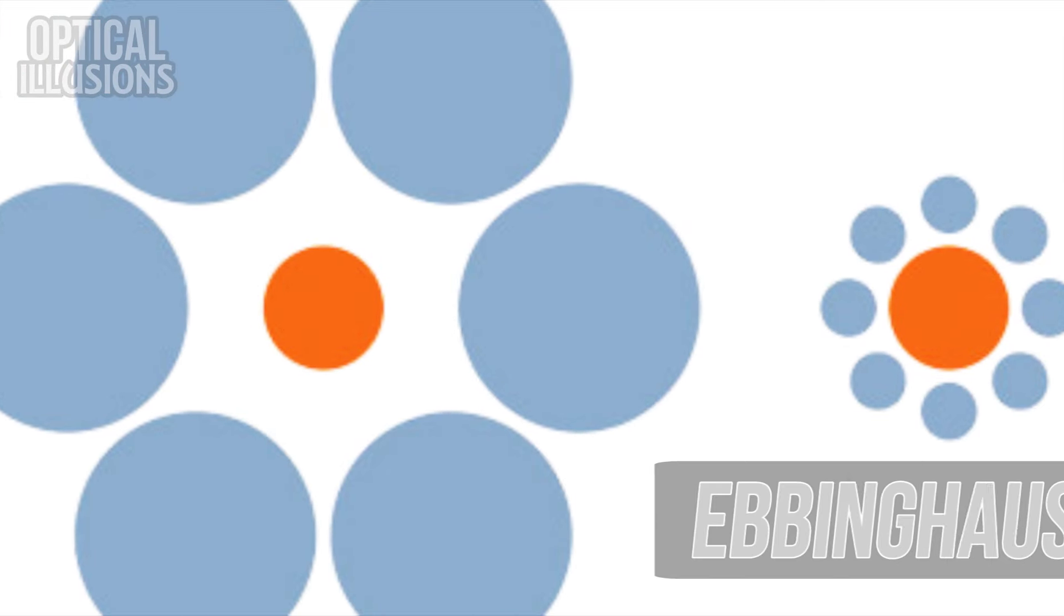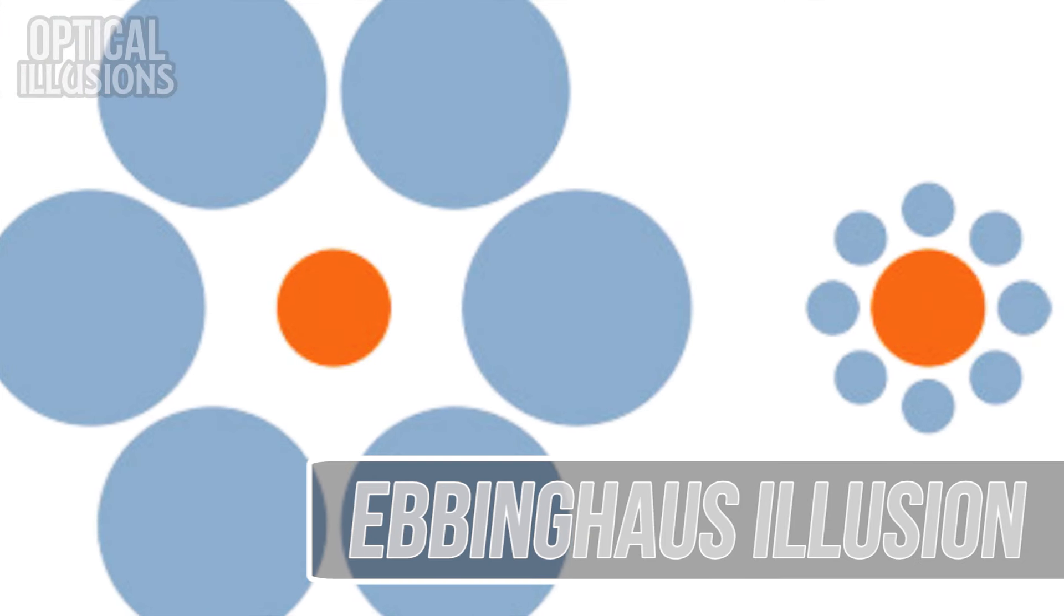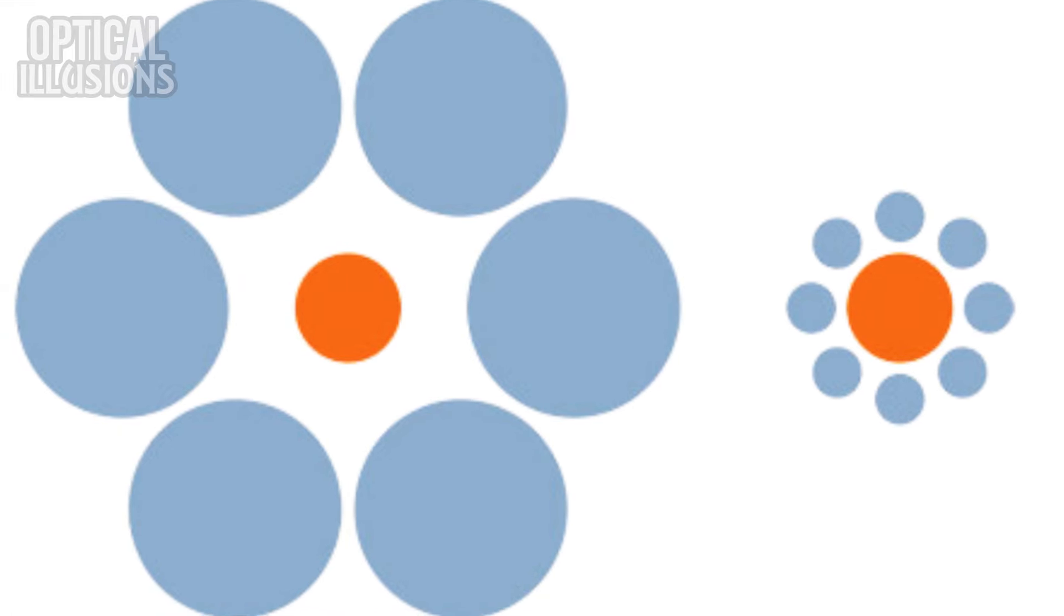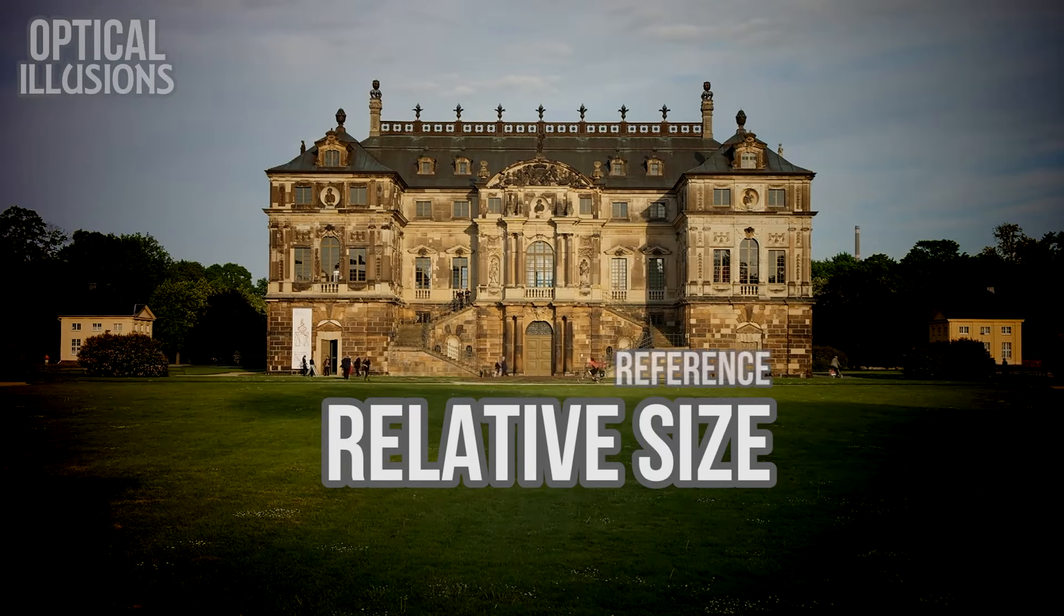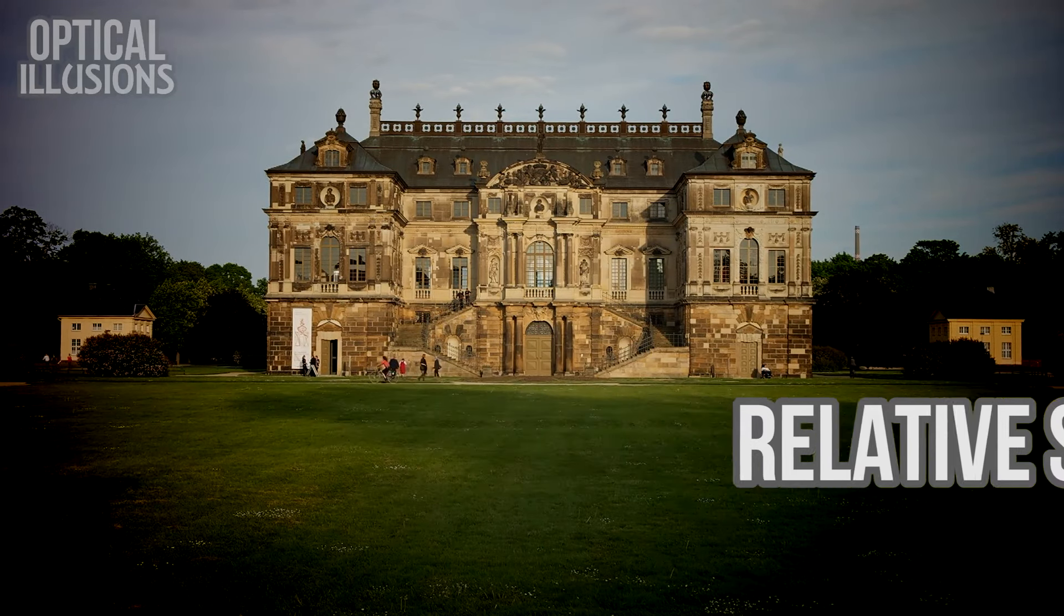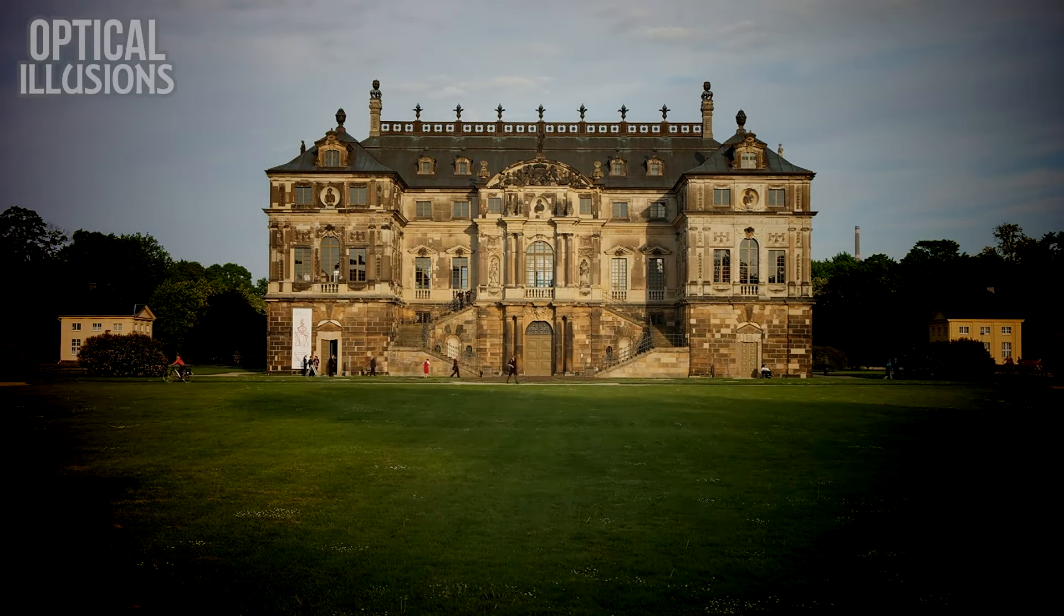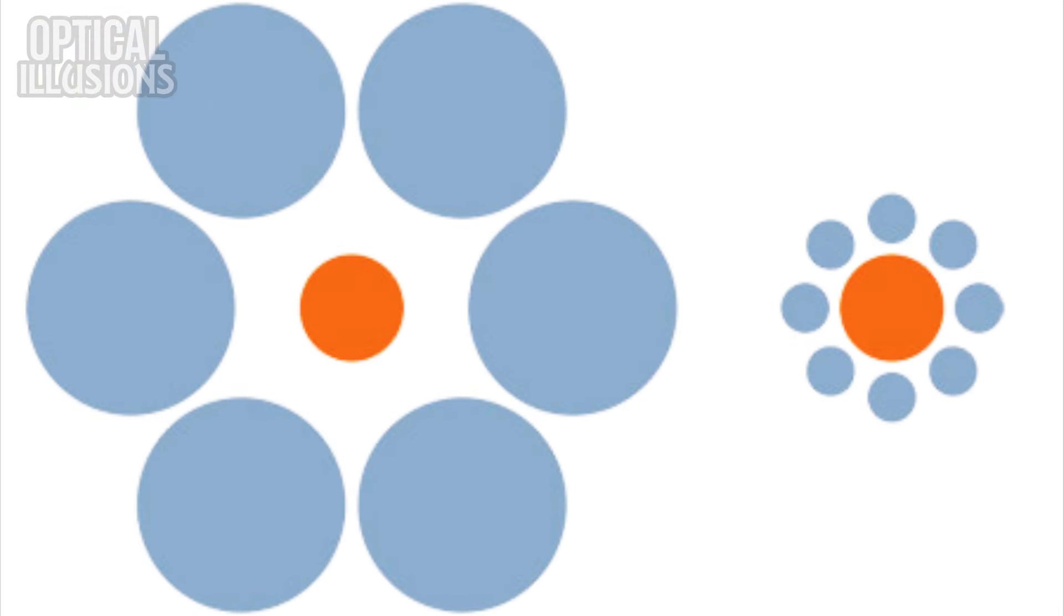Take this. It's called the Ebbinghaus illusion. Those orange circles? They're the same size. Our brains do this because they have developed a method to estimate relative size based on references around an object. This helps us recognize scale at great distances, but when thrown into a 2D image, our brain gets a little confused.